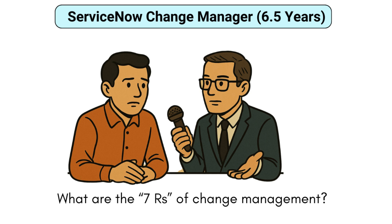What are the 7 Rs of change management? Okay, so the 7 Rs of change management are: who Raised the change — that is Raised; what is the Reason for it; what Return is expected; what Risks are involved; what Resources are needed; who is Responsible for execution; and finally, are there Relationships with other changes? So these are the 7 Rs of change management.